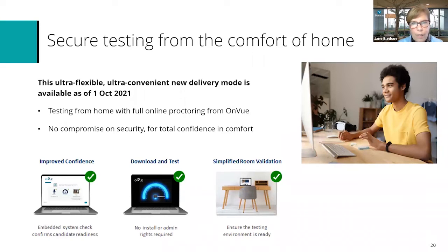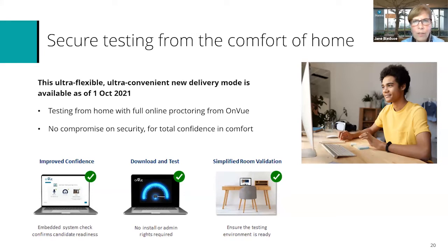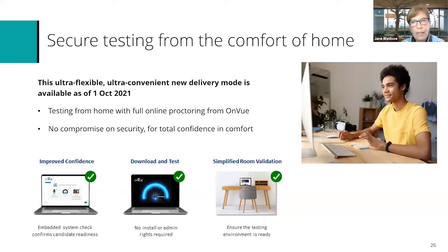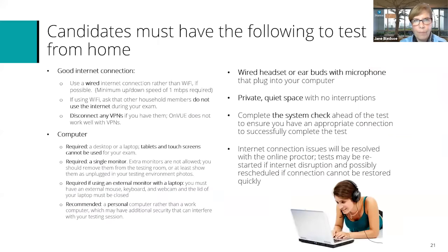If the candidate chooses to take the test from home, they may also choose an at-home online proctored appointment. That proctor will be watching from the computer — so it's really important that the candidate has a webcam and other required technology. The candidate will be watched the entire time they're taking the test from home. This will be available starting in October. Candidates will do a system test, take a picture of themselves and their ID to show the proctor, take pictures of their environment in front, behind, and to the sides of them, and submit those photos. The proctor will be watching the entire time to make sure nothing changes in that environment — it is very secure even from the comfort of home.